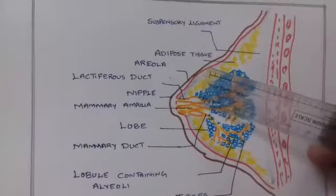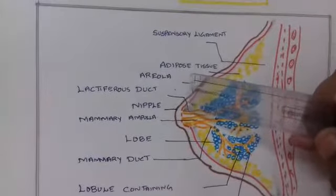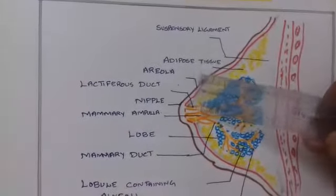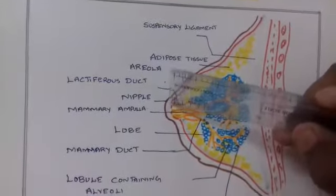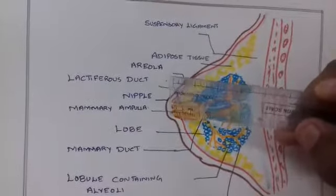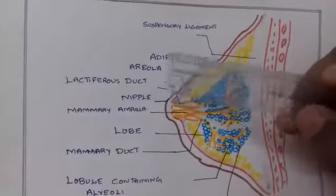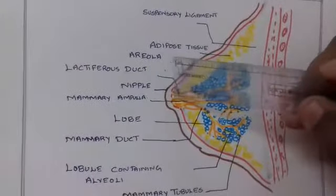This mammary ampulla connected to lactiferous duct. From that lactiferous duct, one milk storage area, the temporary milk storage area is called lactiferous sinus. This lactiferous sinus leads to nipple. Through nipple, the milk comes out.